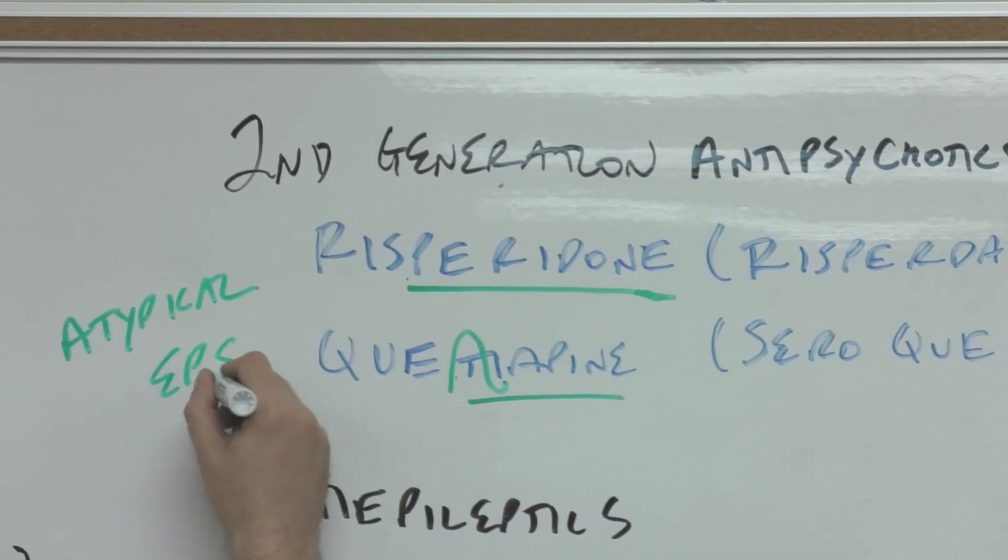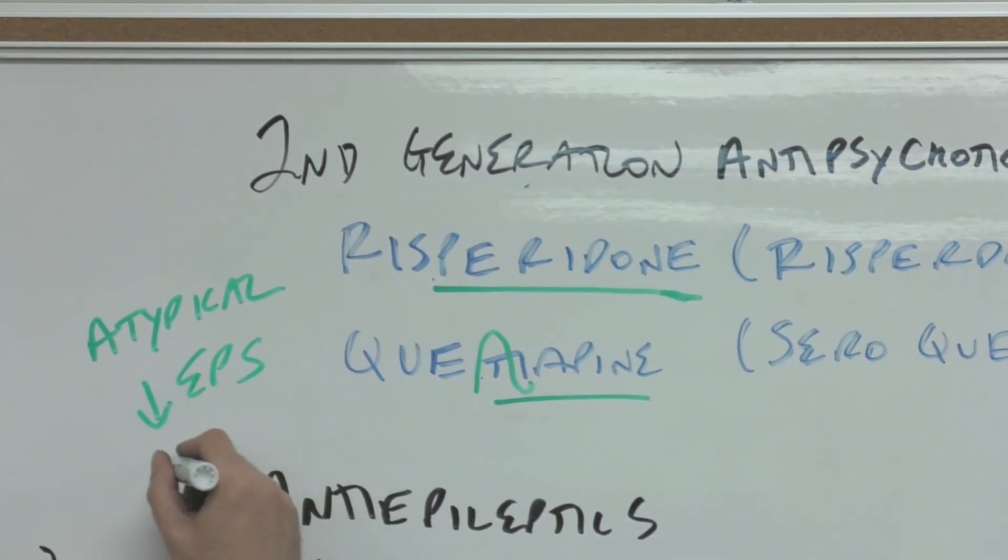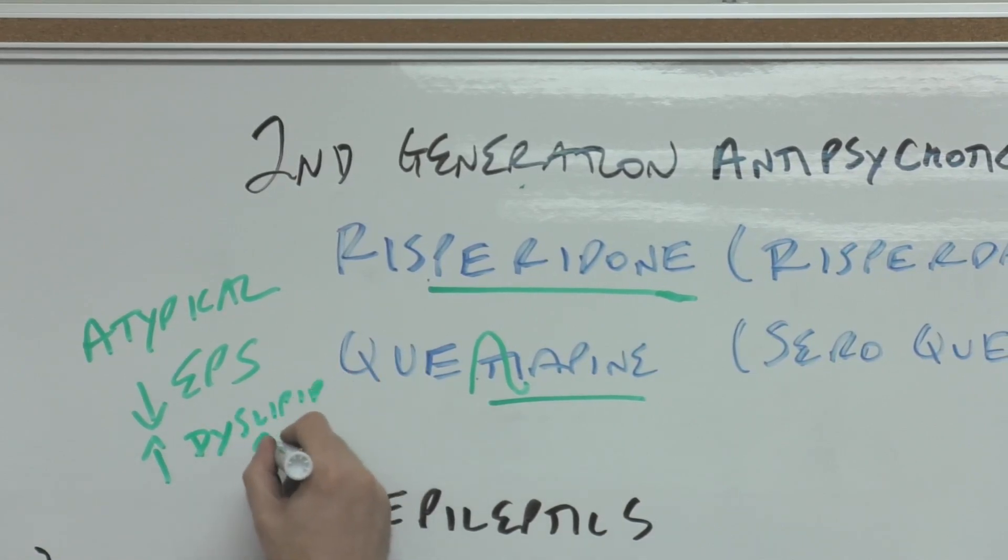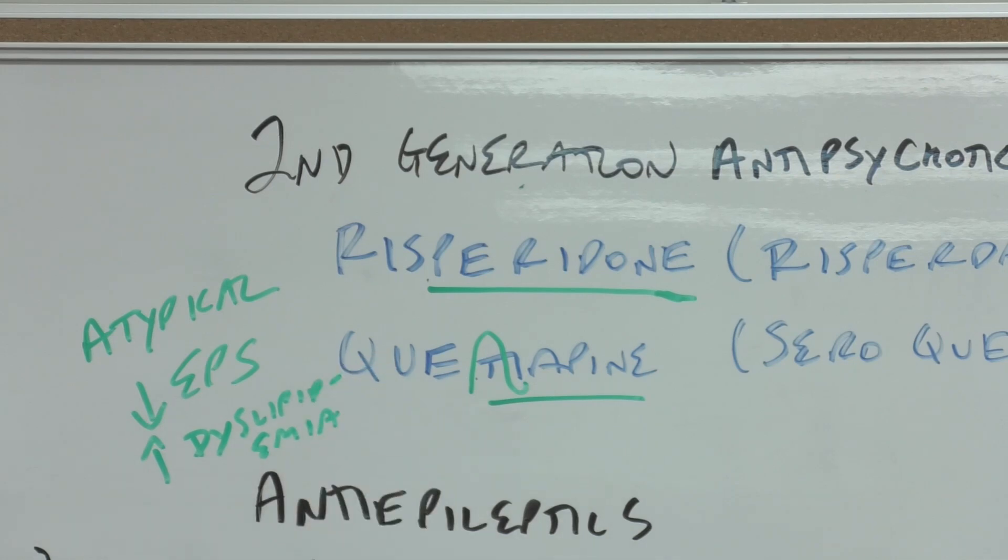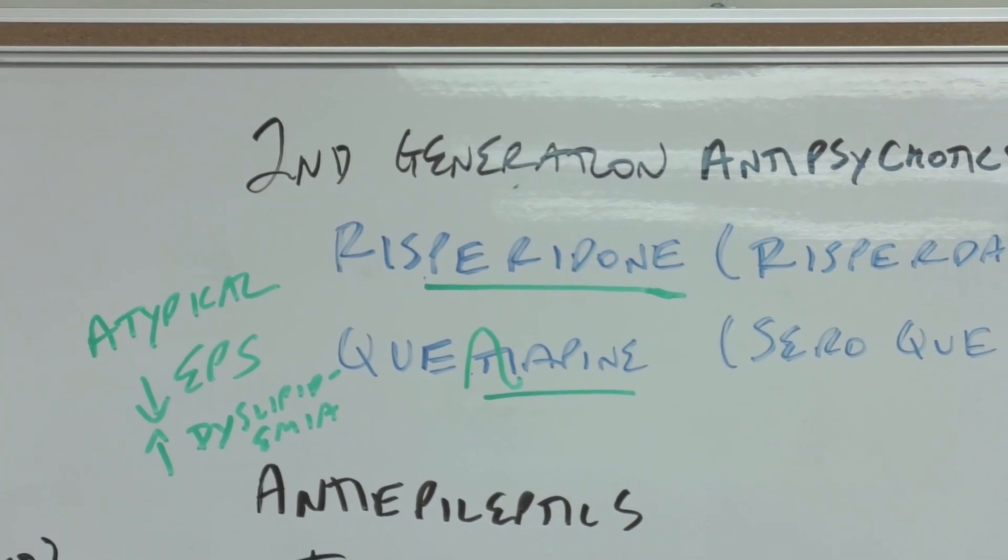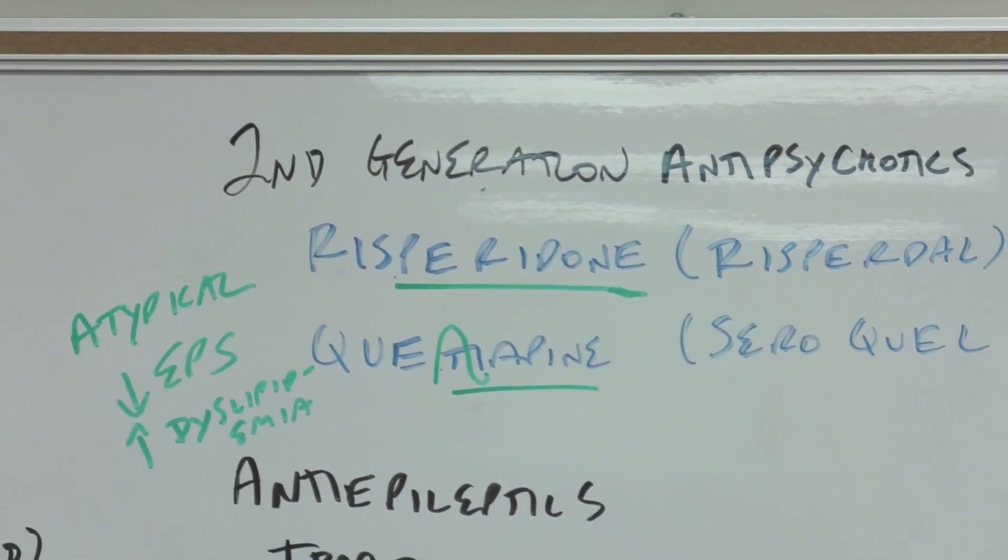Why is that important? Atypical antipsychotics have less extrapyramidal symptoms but would have more dyslipidemia, diabetes, weight gain, things like that in general. There's certainly variation within the class.